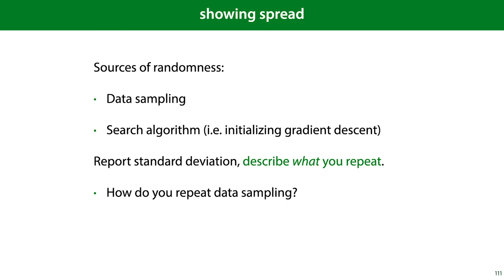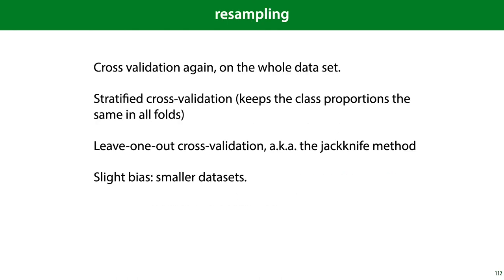But we can simulate the process by re-sampling the data we already have. One way of doing this is by cross-validation, but this time on the whole data set. And here we're not looking for the average, but for the spread in the performance metrics. We can also do this stratified, which means that we keep the class proportions the same in all folds. We can do leave-one-out cross-validation, also known as jackknife method, which is essentially cross-validation with so many folds that the validation set consists of only one point.